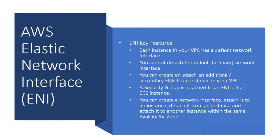Each instance in your VPC has a default network interface, also called the primary network interface, that is eth0. It is assigned a private IPv4 address from the IPv4 address range of your VPC (Virtual Private Cloud). You cannot detach the default or primary network interface from an instance. You can create and attach additional or secondary ENIs to an instance in your VPC.